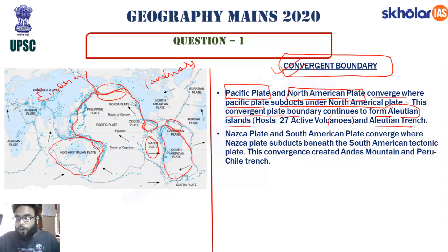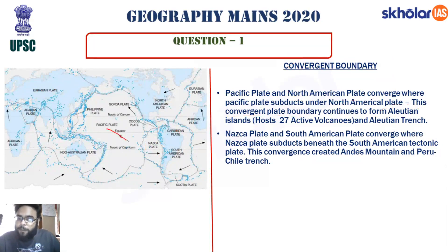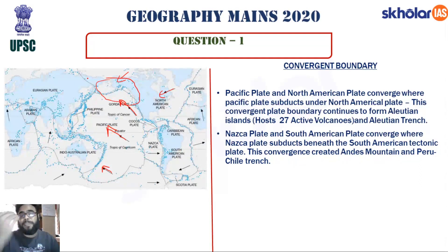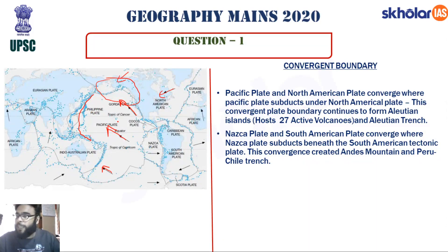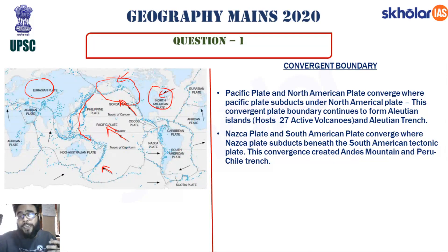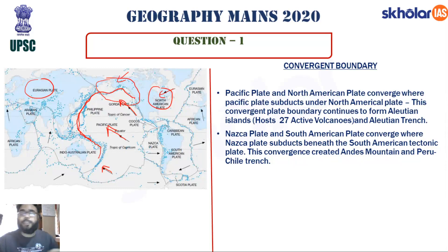As visible in the diagram, the Pacific plate is moving in one direction and the North American plate in another, showing convergent boundary in that region. Similarly, the Eurasian plate and the Pacific plate converge — the Pacific plate being oceanic is denser and subducts, resulting in volcanic arcs, trenches, and volcanic mountains in the western portion of the Pacific Ocean.